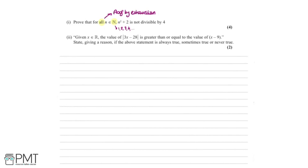We need to be a bit more clever about this. A way we could categorize the natural numbers is as odd and even, so we're going to see what happens for an odd number and what happens for an even number. We start by looking at when n is even.